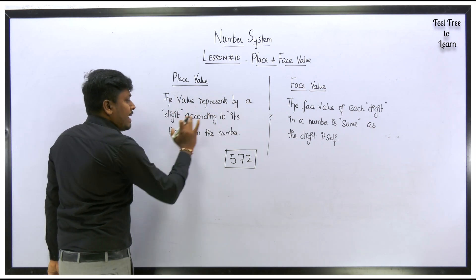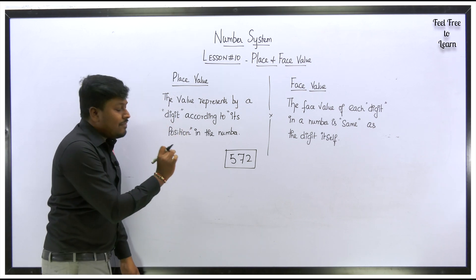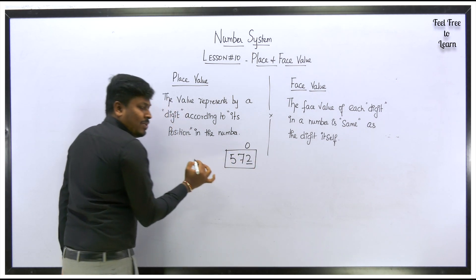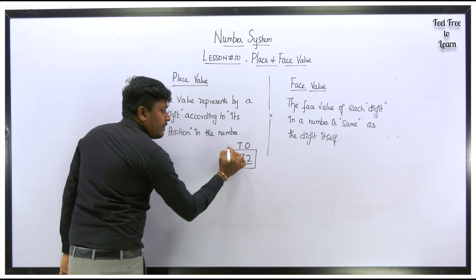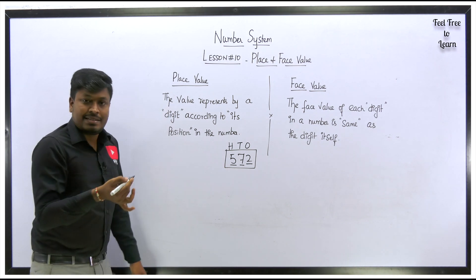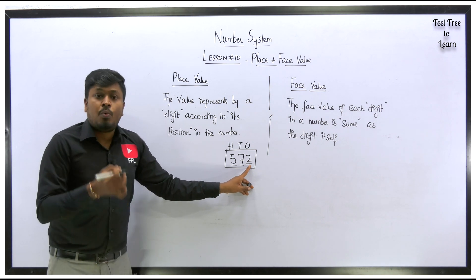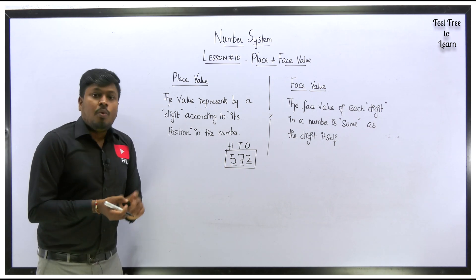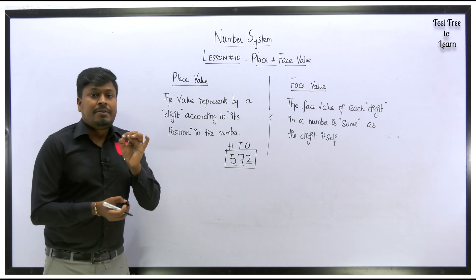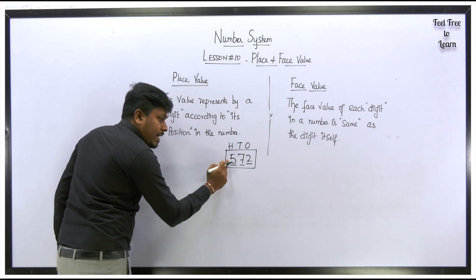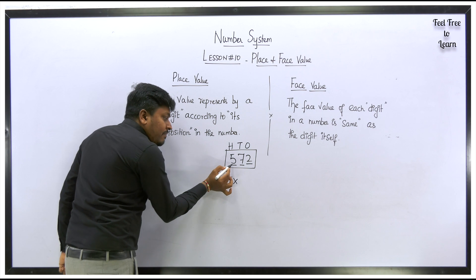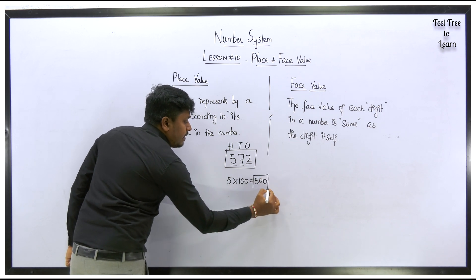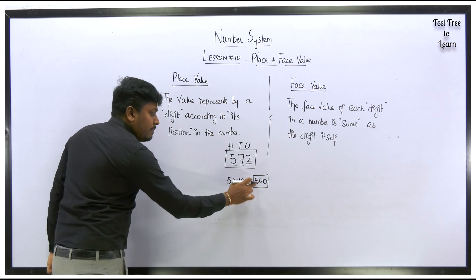Place value is the value represented by a digit according to its position in the number — we learned this concept in school. In the number 572, digit 2 is at the ones place, digit 7 is at the tens place, and digit 5 is at the hundreds place. It continues with thousands, ten thousands, and so on. If they ask what is the place value of 5, it is 5 multiplied by 100 — its position — which equals 500.